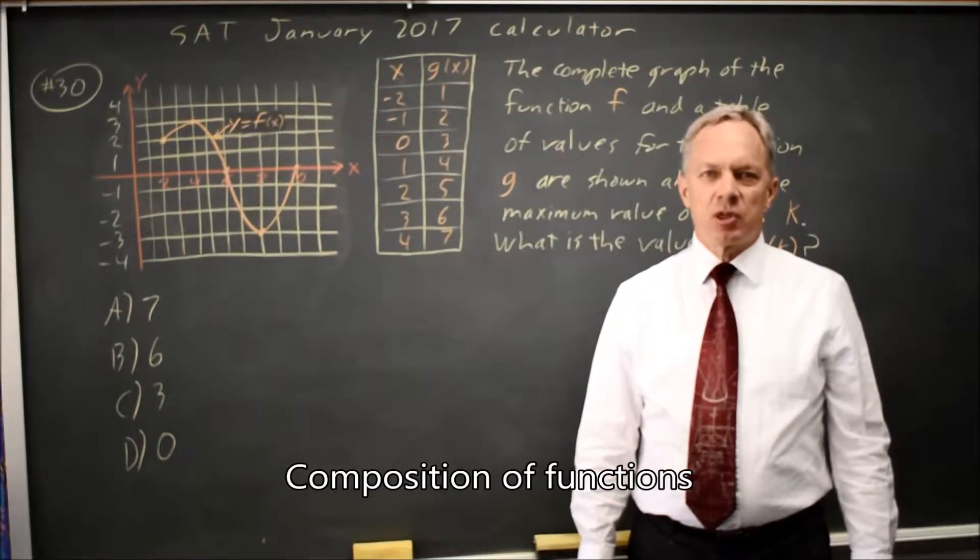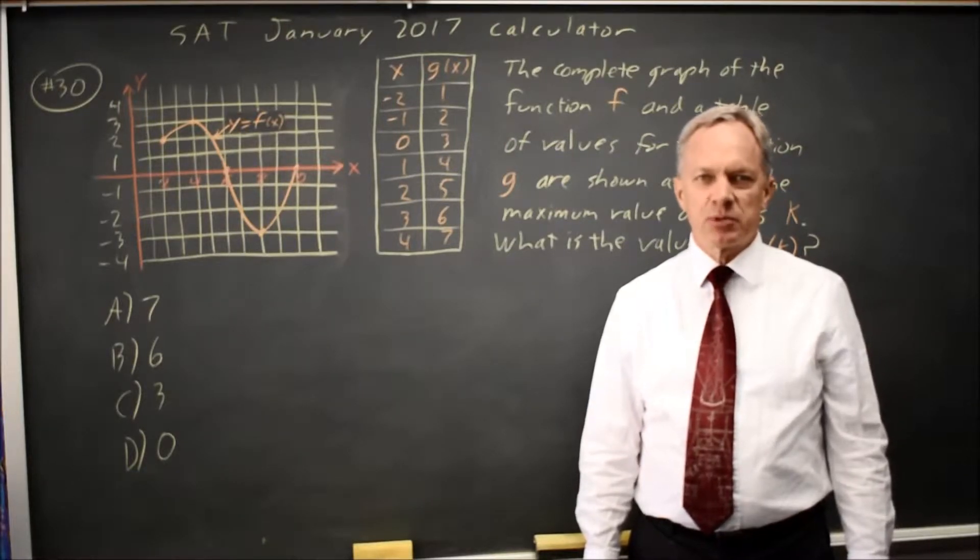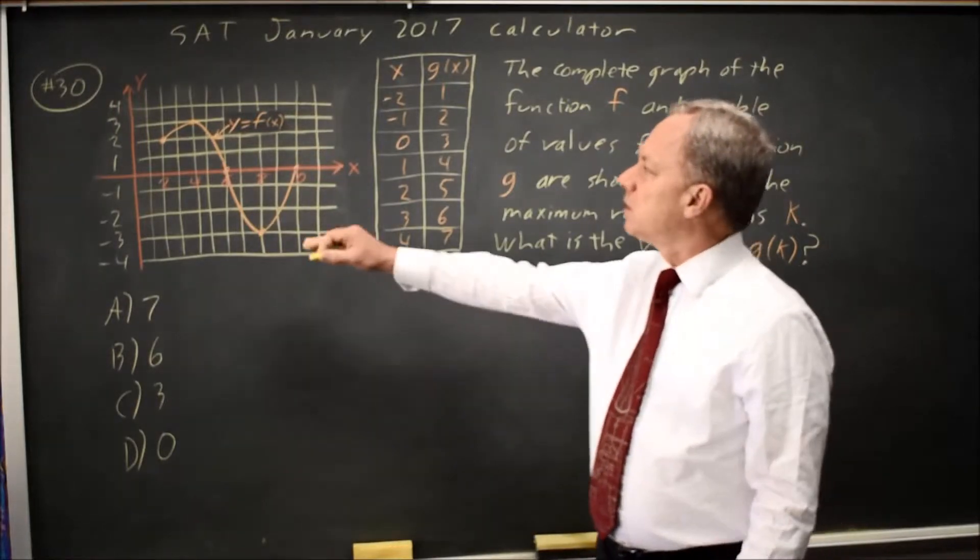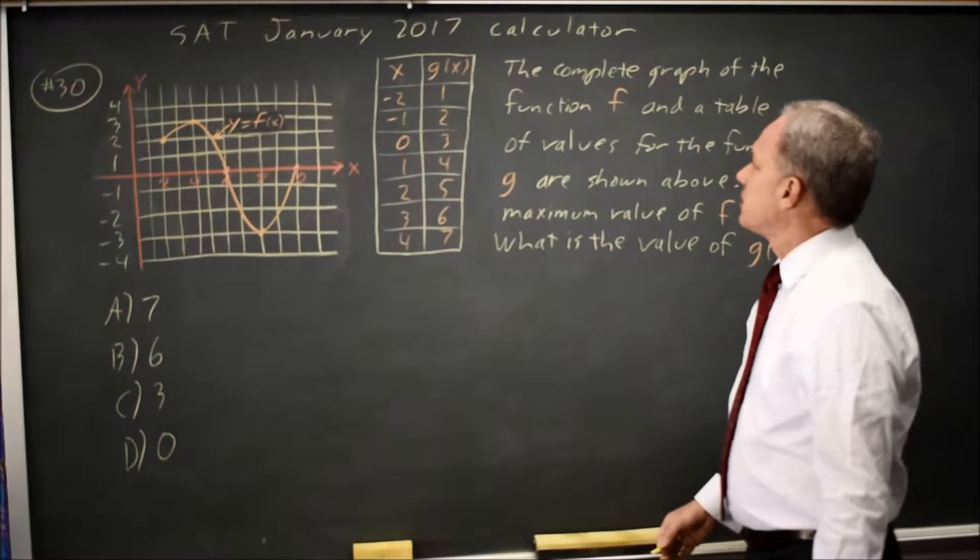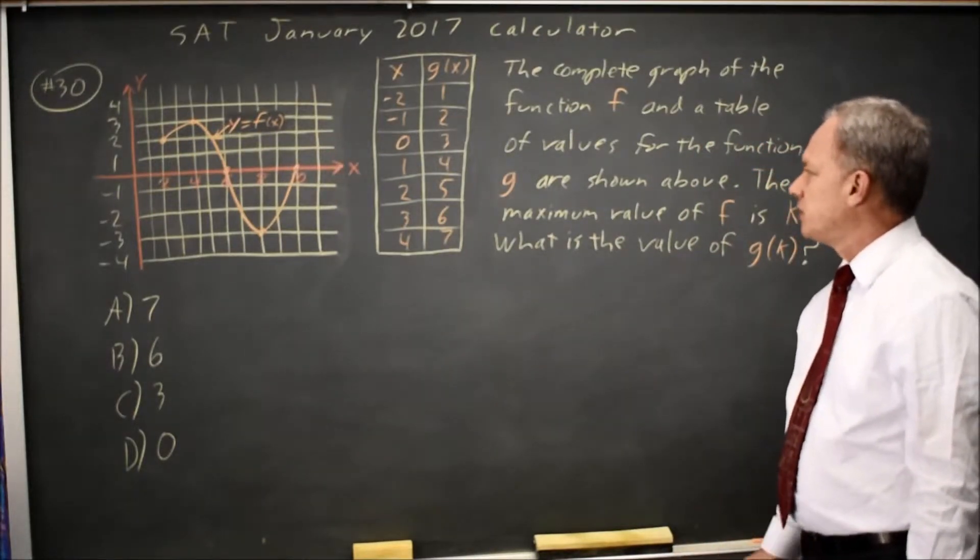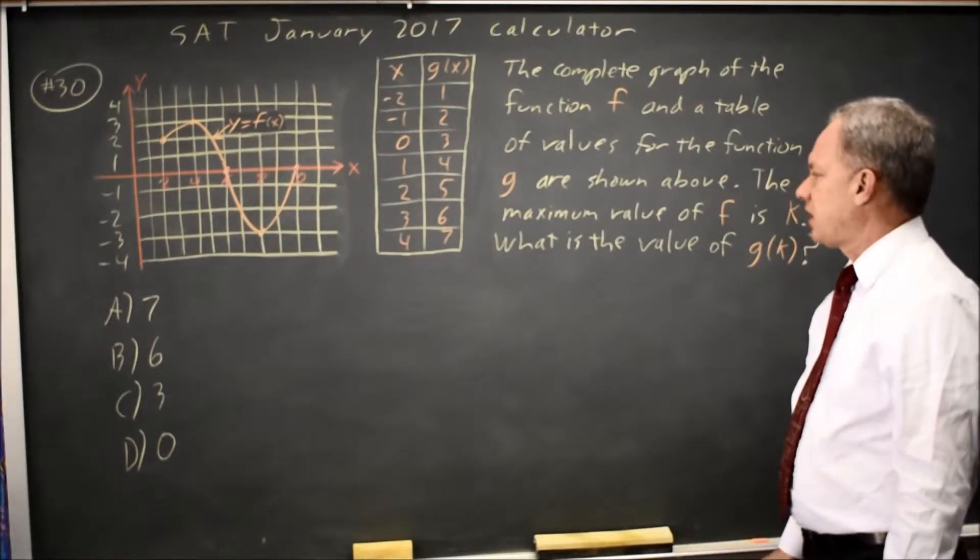This is calculator question number 30 from the January 2017 SAT exam, which is also practice test 8 from the 2018 version of the practice book. College Board gives us a graph for f of x and a table for g of x, and they say the complete graph of function f and a table of g are shown. The maximum value of f is k.